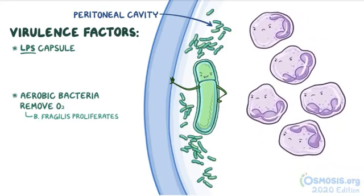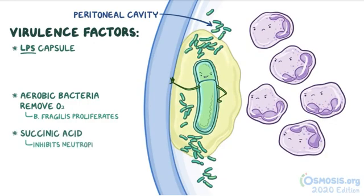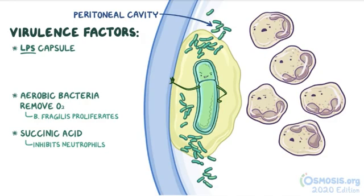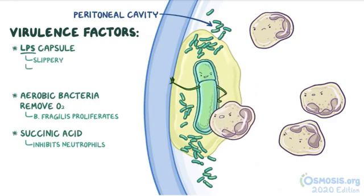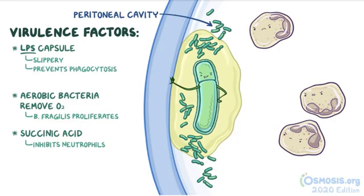The bacterial presence in the peritoneal cavity arouses a stream of neutrophils to the site of the infection. However, the anaerobic metabolism of Bacteroides fragilis generates succinic acid, which inhibits the function of neutrophils, so they can't neutralize Bacteroides fragilis. What is more, the LPS capsule of Bacteroides fragilis is also slippery and slimy, so it prevents phagocytosis — the bacteria literally slip from the immune cell's grasp.